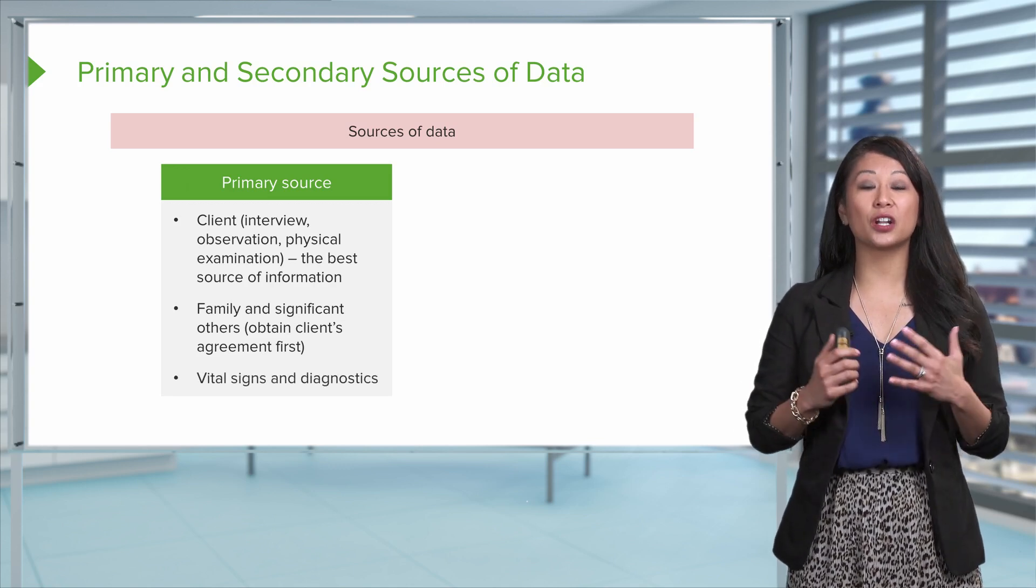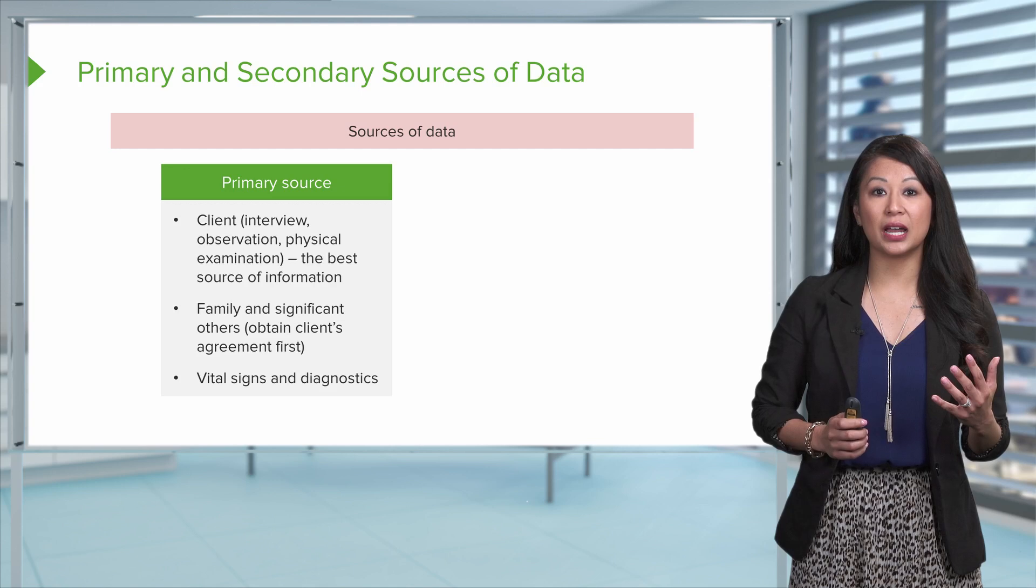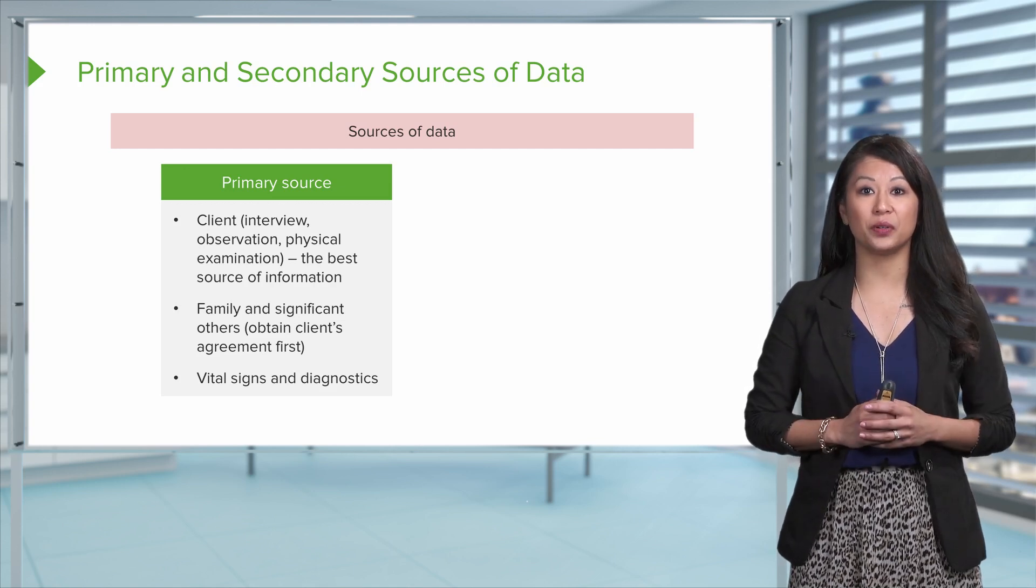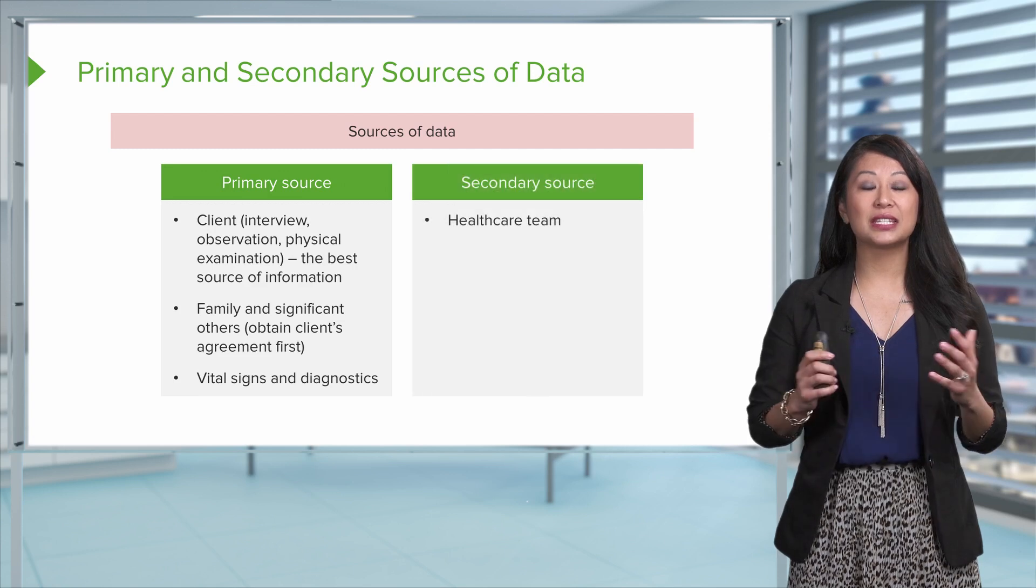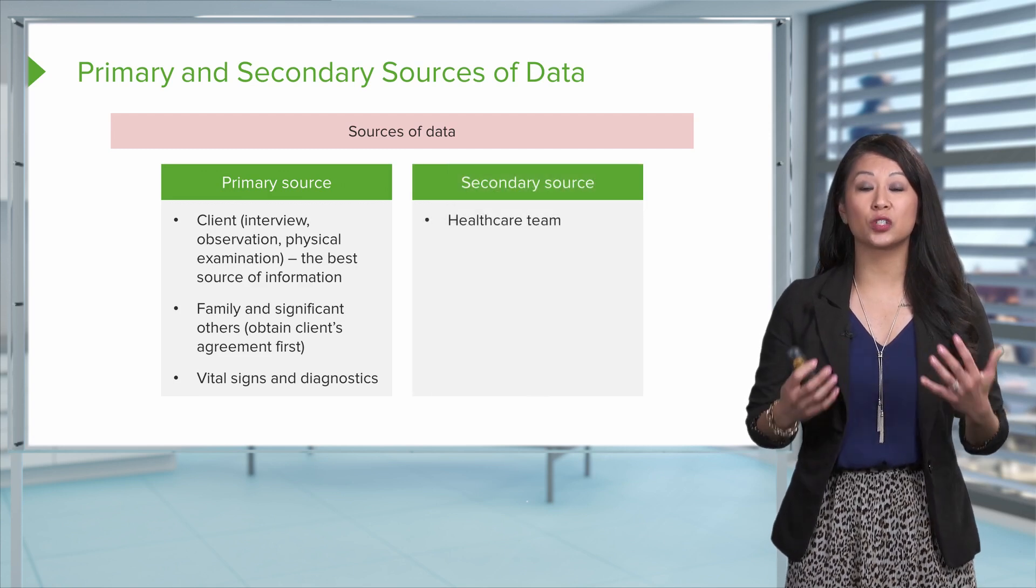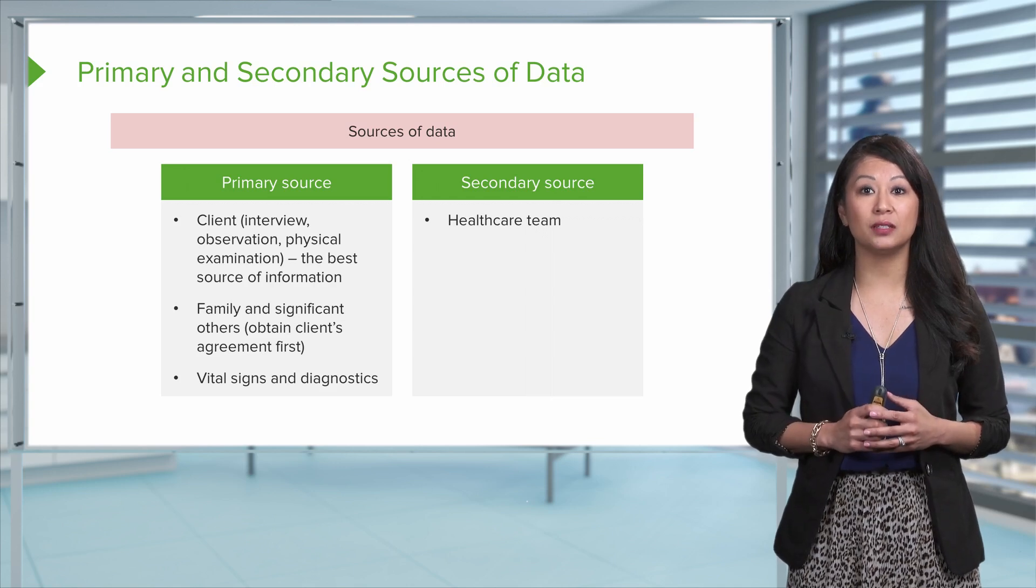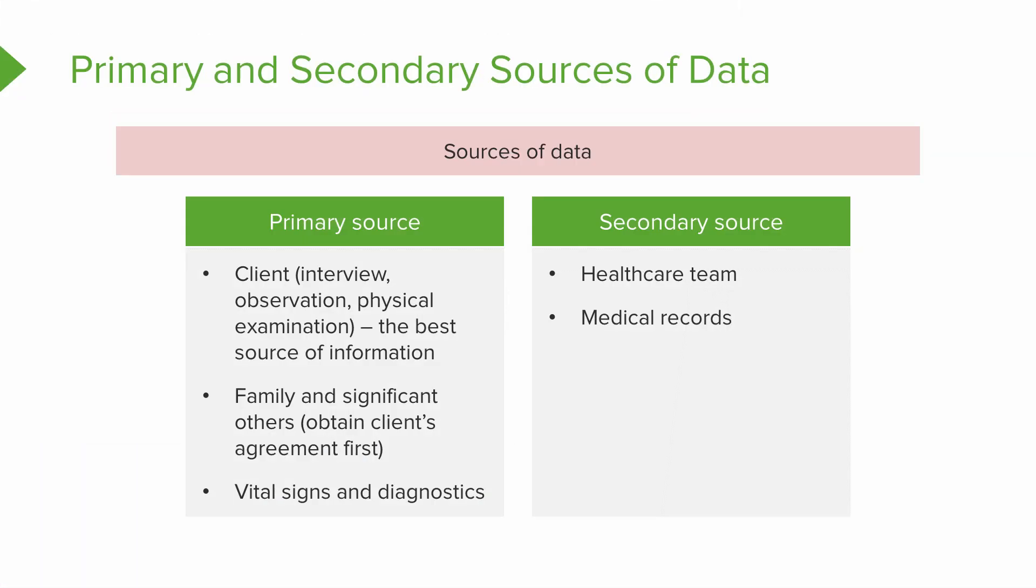And of course, don't forget about our objective data, like our vital signs or our diagnostic pieces, like labs, x-rays, for example. Now, the secondary source is a great source of data. We use this as more of a supporting information, such as the healthcare team, the medical records of the patient, and also any scientific literature that's gonna help back up how we're gonna treat our patient.